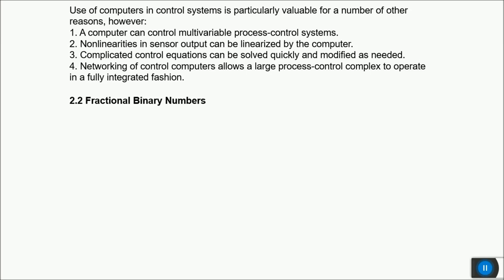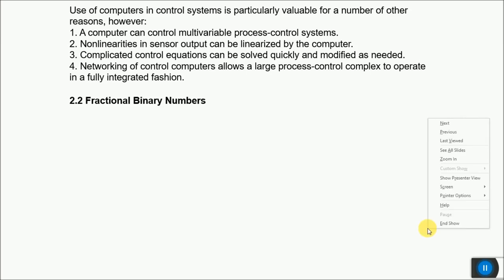Digital data is represented by binary numbers — ones and zeros — which we have extensively studied in previous courses on logic design, computer architecture, and microprocessor systems. Whole numbers can be converted from decimal to binary form using a simple formula.